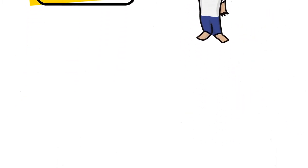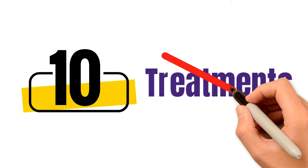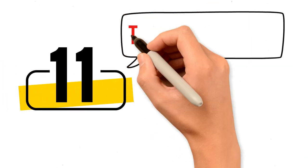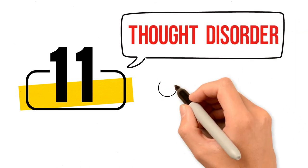Number ten: Currently, there are no treatments specifically to treat anhedonia. It is usually treated in tandem with depression, bipolar disorder, schizophrenia, etc. Number eleven: Anhedonia may bring about thought disorder (TD) or formal thought disorder (FTD), which shows up as disorganized thinking and disorganized speech.